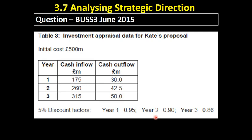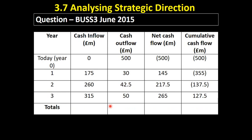I'm not sure if they actually had to calculate the average rate of return in this question in Buzz 3 June 2015, but certainly with that information we can do it. Just to remind you, this was a project that had an initial cost of 500 million, and then earned these inflows and incurred these outflows over a three year period. So we constructed this table when we were looking to calculate the payback — all we need to do is add a column for totals.